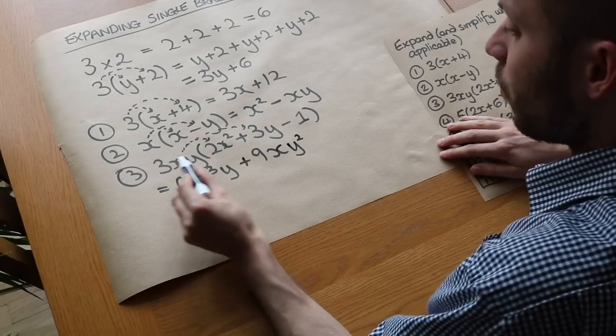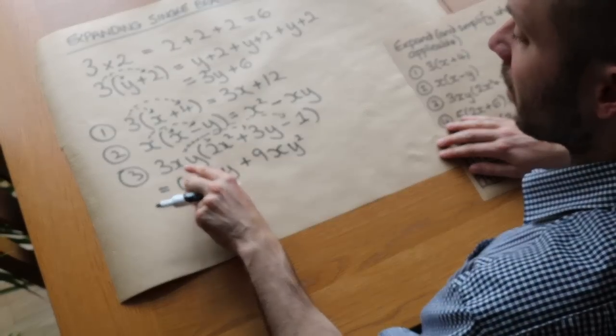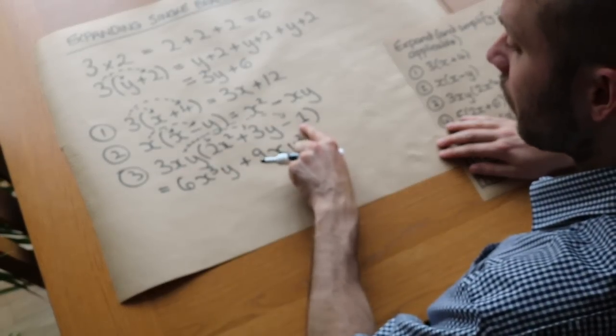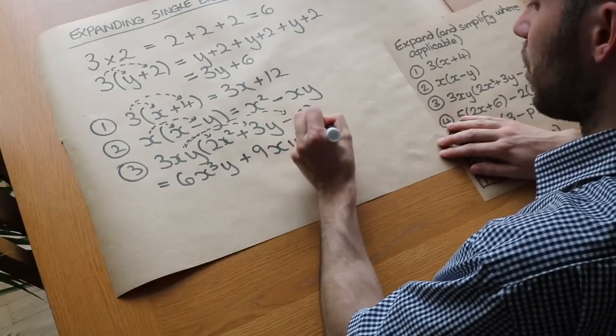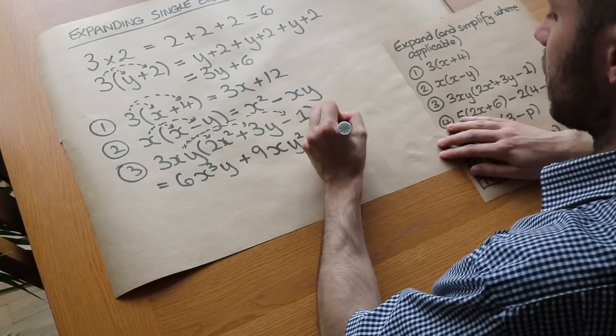And finally, we've got the 3xy times the last term, which is minus 1. So we've got 3xy times minus 1. Well, 3 times minus 1 is just minus 3. So we've got minus 3, and we've got the xy there already.